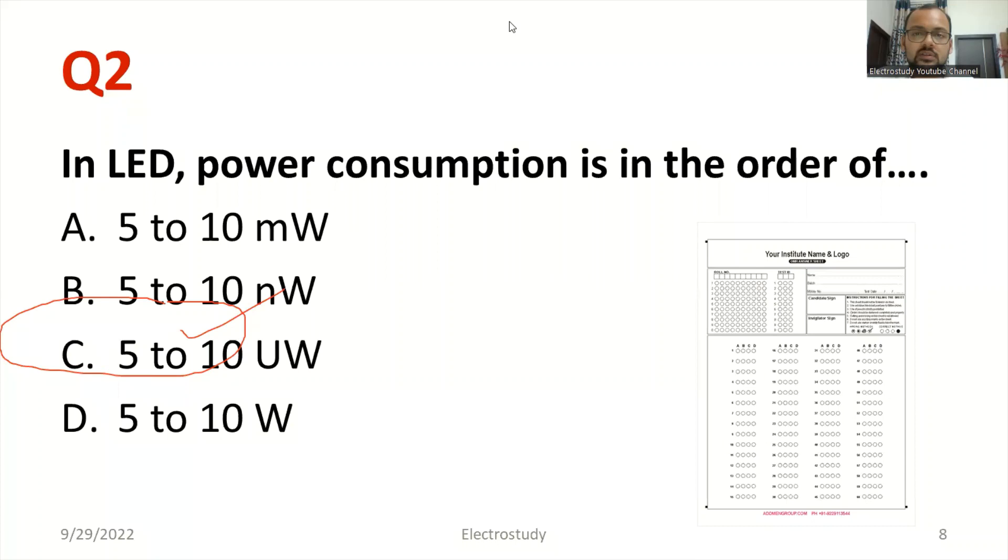Please note down the next question. In light emitting diode, power consumption is in the order of which would be the appropriate answer. Please think once. Anyway, it's a low power device which consumes very less amount of power. So obviously, it will be in the range of 5 to 10 mW. Please select option A.